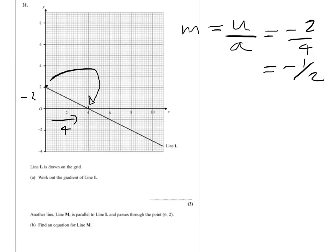Now for the second part of this question, we're told that another line M is parallel to L. So if it's parallel, we know that its gradient is the same.